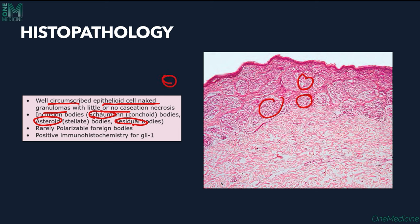Schaumann or conchoid bodies are concentric, around 100 micrometers in diameter, containing calcium, iron and birefringent crystals. Asteroid bodies measure around 10 micrometers and have a central core of collagen arranged in a radiating fashion. Residual bodies contain lipomucoproteins. Polarizable foreign bodies — calcium, aluminium, silicon, phosphorus — that trigger granuloma formation can also be seen.